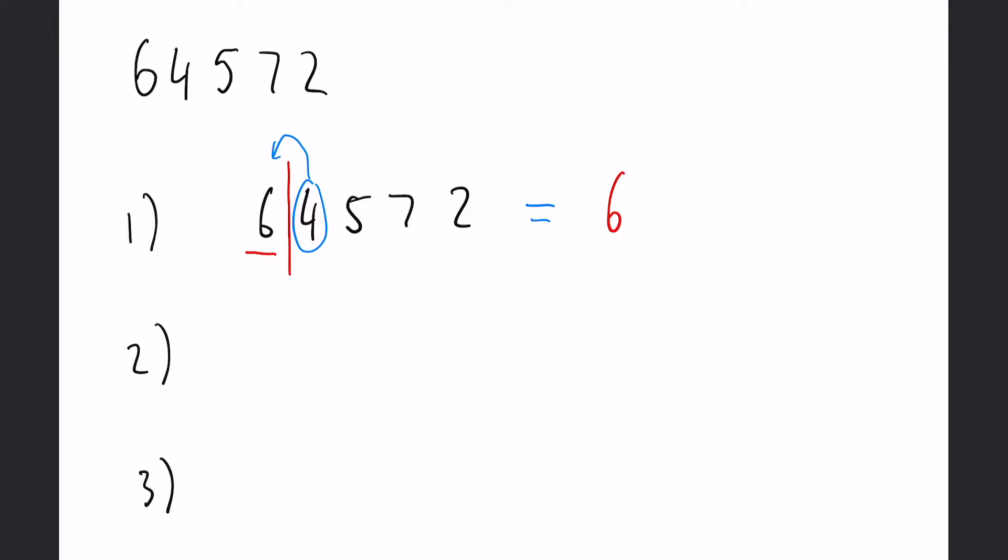In this, a lot of people I see will just write a six, but obviously that is nothing near 64,572. So remember we're trying to estimate the number in a way to make it easier for ourselves. So 64,572 would become just 60,000, so as long as it's close to the original number then it's okay.